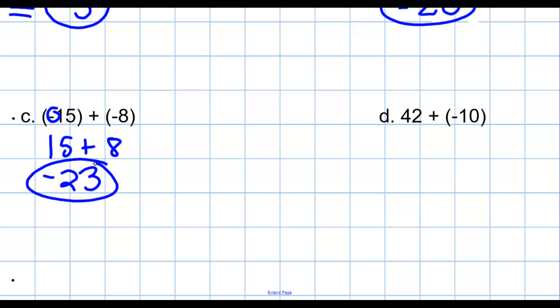In the second example, the signs are different. So you take the bigger one, 42, subtract the smaller one, 10, and you get 32. Now, the bigger number is 42. It's positive, so your answer is going to be positive. You can either just leave it, or you can actually write the positive symbol. It doesn't really matter.